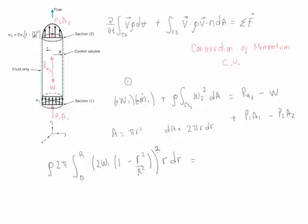So 2 W1 squared comes out, 2 squared becomes 4, so it's 8 rho pi W1 squared, integration from 0 to R, and we're going to multiply this out.